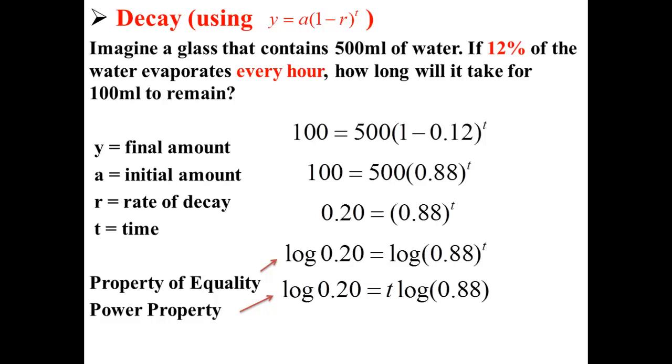We divide each side by log 0.88 to find that t is equal to log 0.20 divided by log 0.88, or simply 12.59. So it will take 12 hours for 100 milliliters of water to remain from our initial 500 milliliters of water, at a rate of decay of 12% every hour.